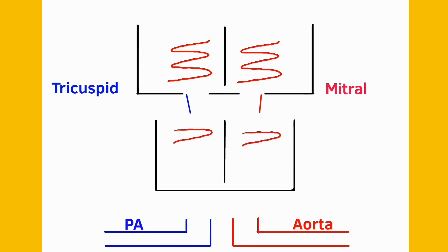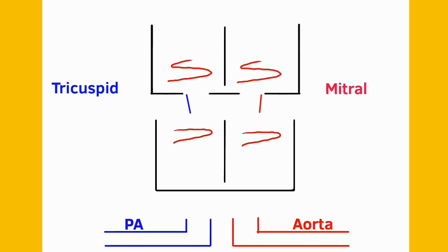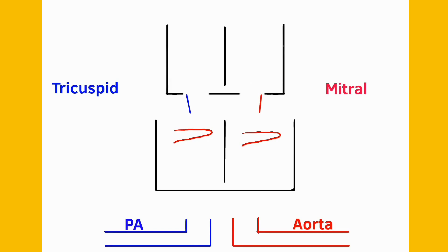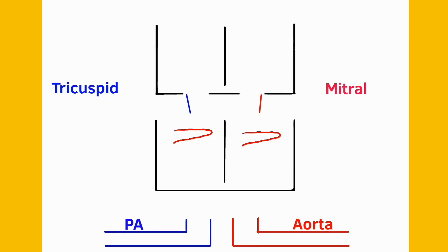After opening up these valves, blood starts leaving the atria, which means the atria can recoil back to their resting state. At some point along the way, the atria contract and push the remaining blood into the ventricles — this is called the atrial kick. Once that's done, the atria come back to their resting state and are ready to be filled again.